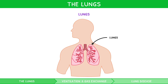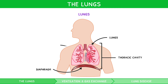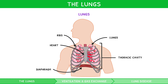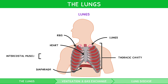The lungs are large, air-filled organs in our thoracic cavity. They sit on top of a curved muscle known as the diaphragm, with the heart nestled between the two lungs. They are contained by the ribs, which form a cage to protect the lungs from trauma. Between the ribs, there are muscles known as the intercostal muscles, separated into two layers — the outer, external, and inner, internal intercostal muscles.